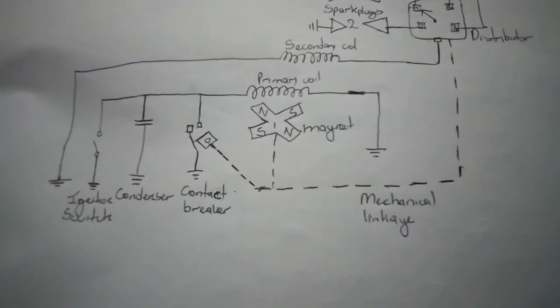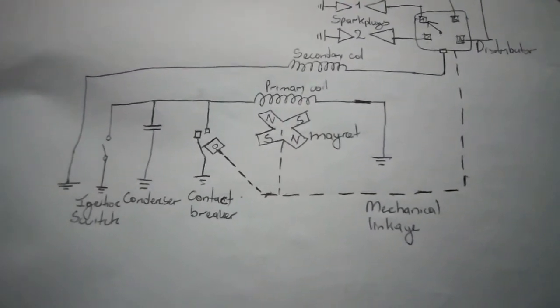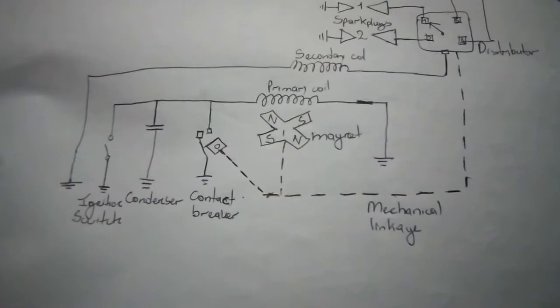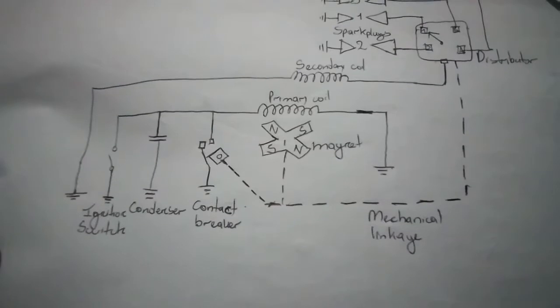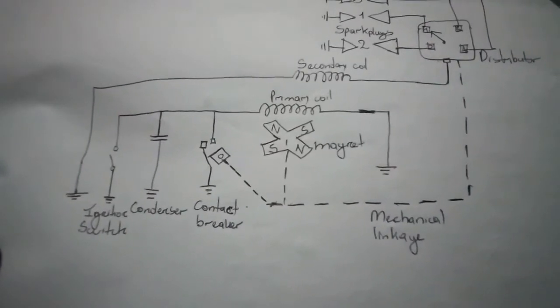Now magnetos come in pairs and they're normally connected to the accessory section of a reciprocating engine. Let's get into the principle of operation.